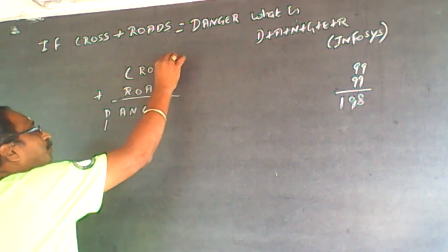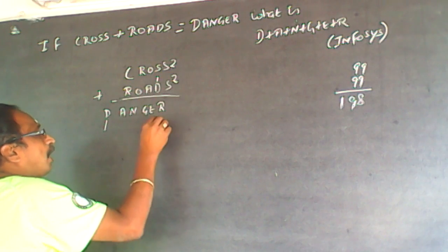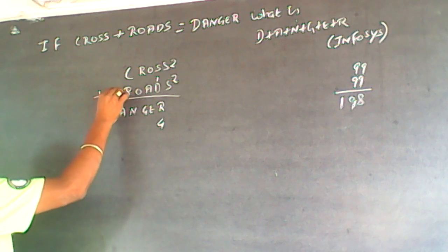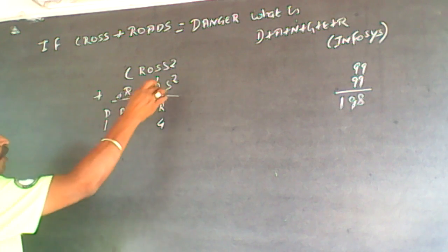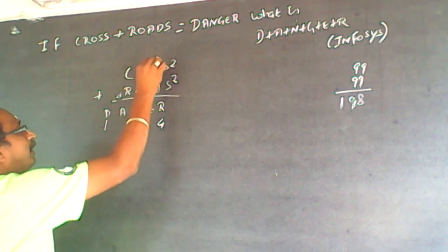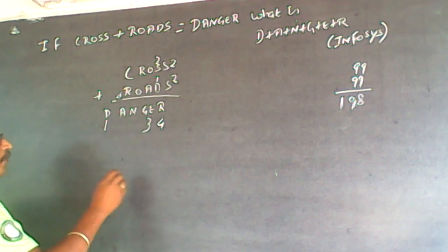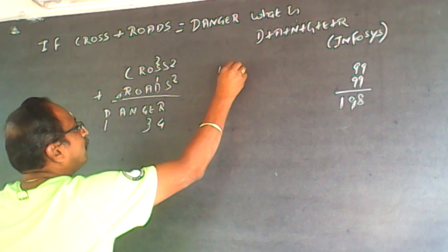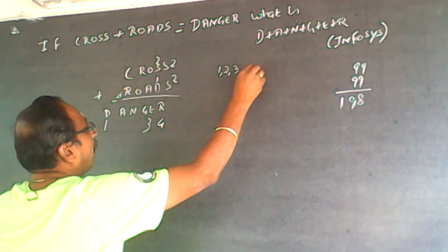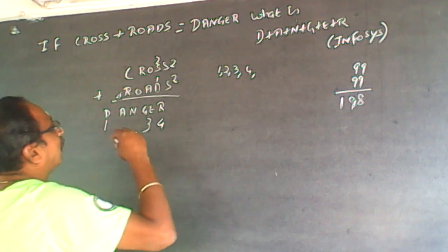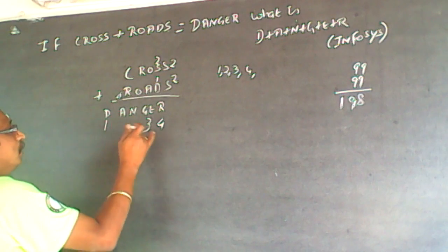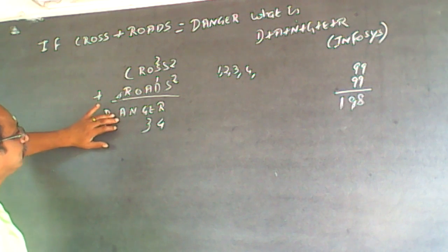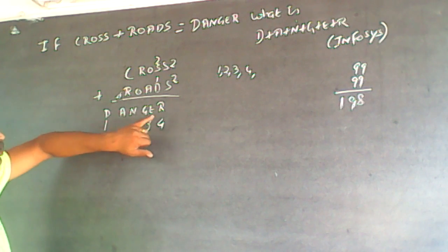Then I try S equals two. When S is two and two, R will be four. So if R is four here, R has to be four everywhere. With this carry, E becomes three. So the numbers used so far are: one, two, three, four. A can't be one, two, three, or four.